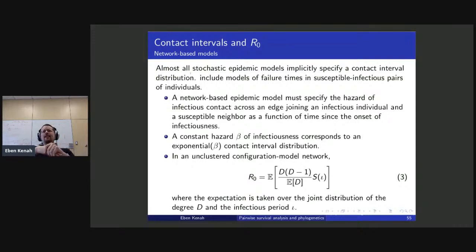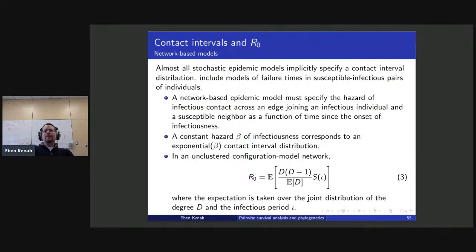The hazard function of the contact interval distribution tells us about instantaneous infectiousness — sometimes called the infectiousness profile. The probability that j receives an infectious contact from i in a small time interval is proportional to the hazard function times the width of the time interval. We get both transmission probabilities and infectiousness profiles out of the contact interval distribution. Contact interval distributions are embedded in any stochastic epidemic model, though not always explicitly.